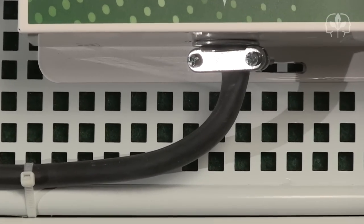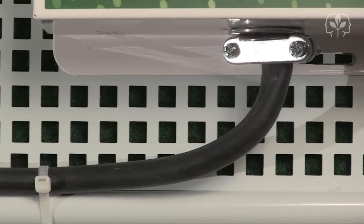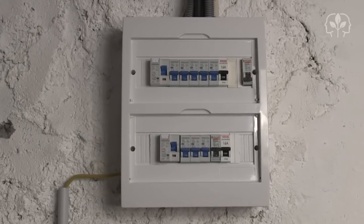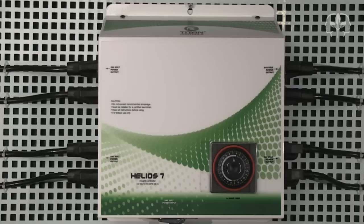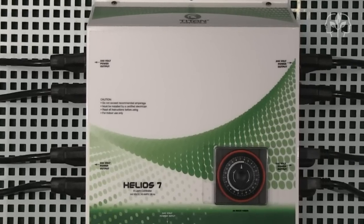Just remember that the Helio 7 should be installed by a certified electrician. It needs to be wired directly to your 240 volt electrical supply. It has 8 universal sockets to run 8 240 volt ballasts.